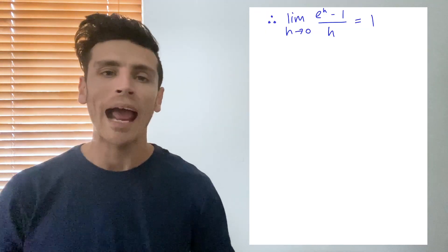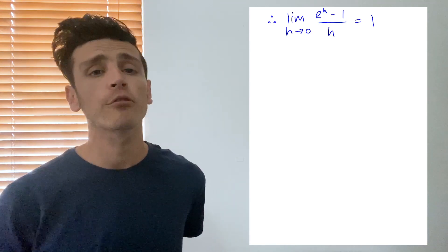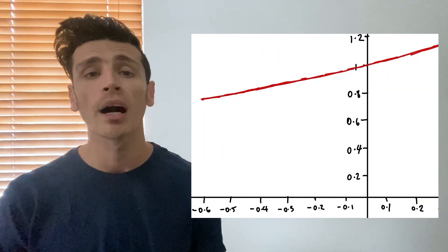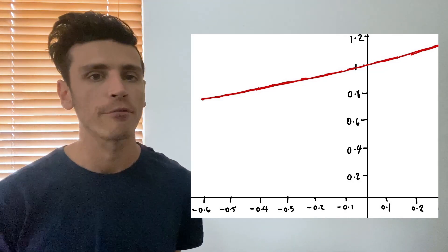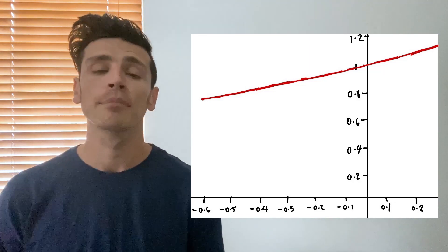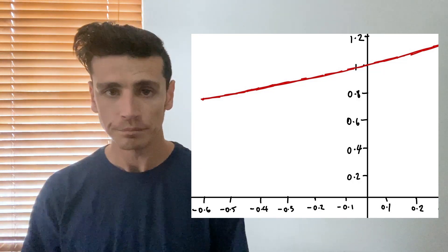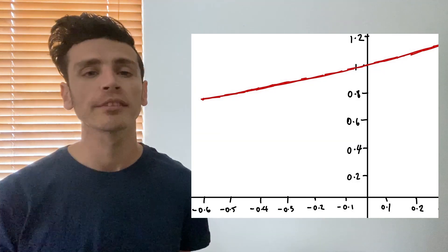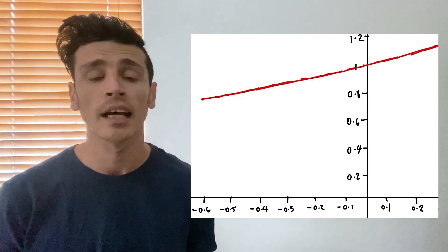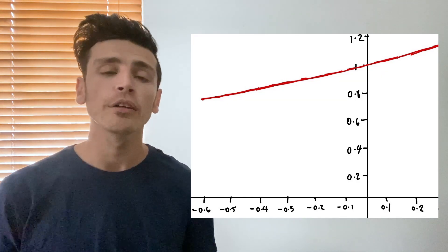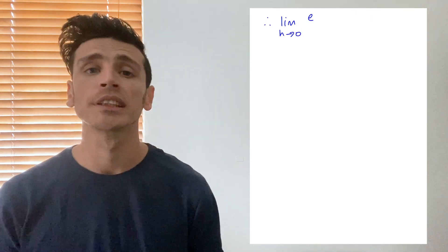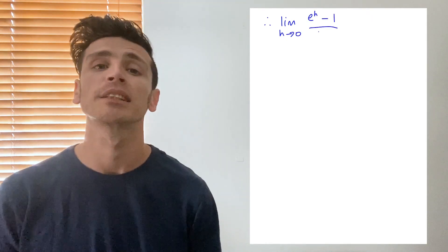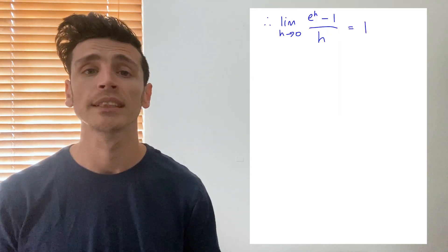If you didn't want to do all that algebra, you could simply look at a graph. What I've graphed is e to the power of x minus 1, all divided by x — the same concept using x as the variable instead of h. As you can see from both sides of the graph, from the negative x side and the positive x side, it goes towards y equals 1, confirming that the limit equals 1.